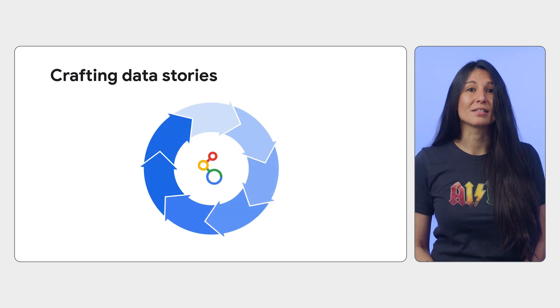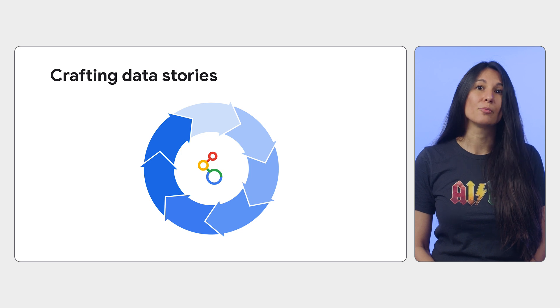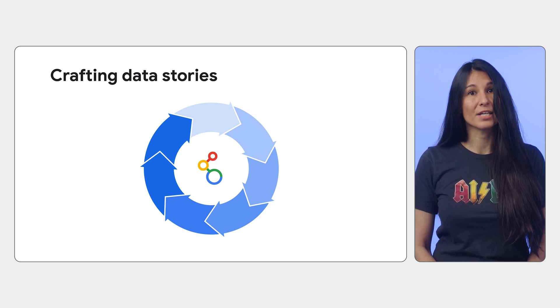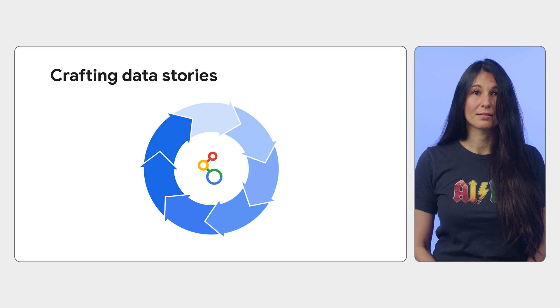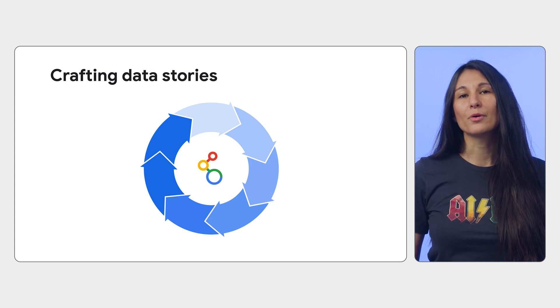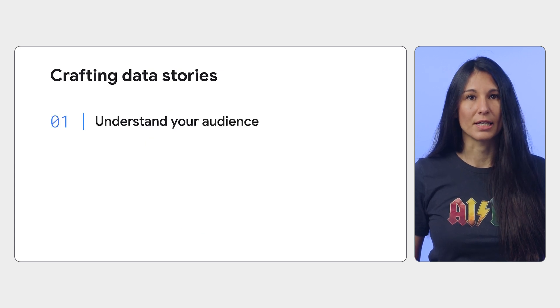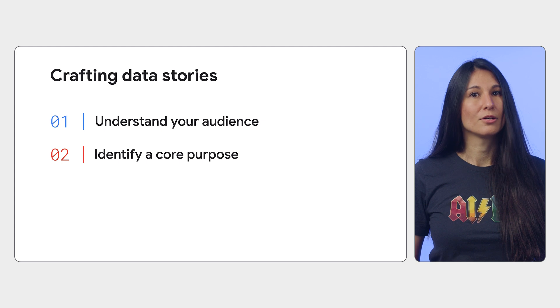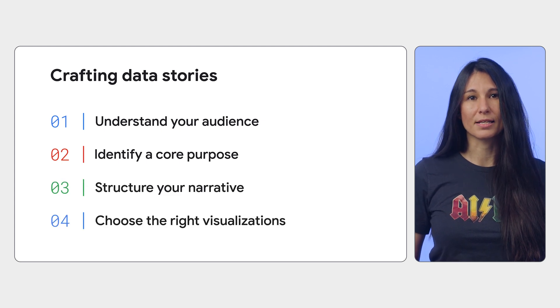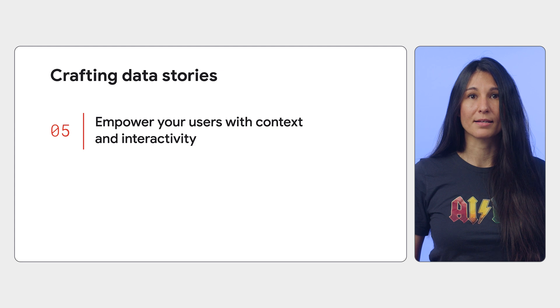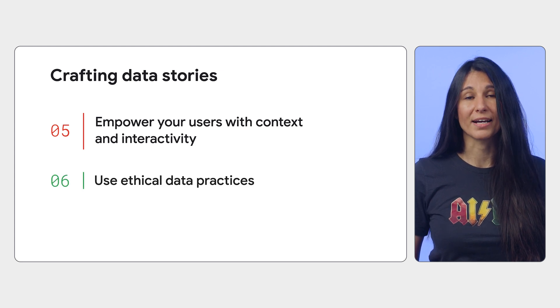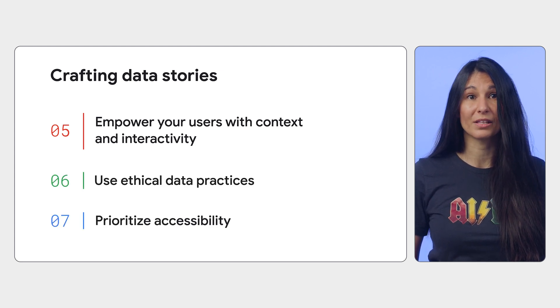Turning raw data into a compelling story can be tough — there's a lot to consider. In this video I propose a seven-step framework that uses Looker reports to help you improve your data storytelling skills and craft data stories that answer critical business questions. The key steps are: understand your audience, identify your core purpose, structure your narrative, choose the right visualizations, empower your users with data context and interactivity, use ethical data practices, and prioritize accessibility.